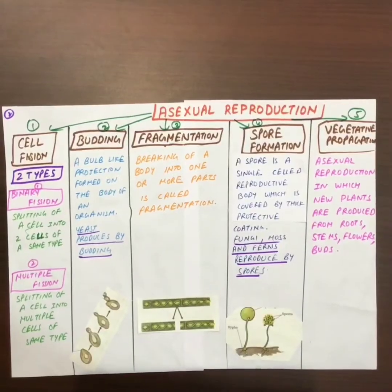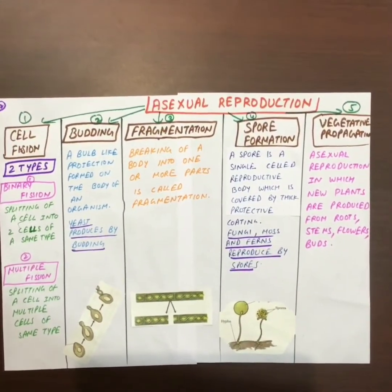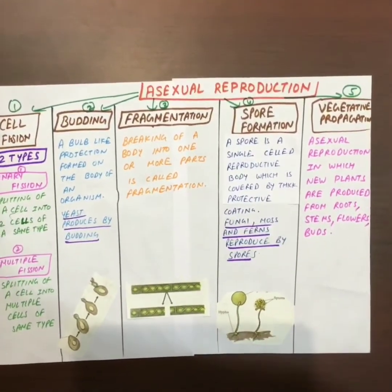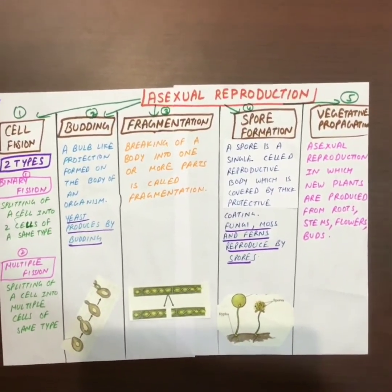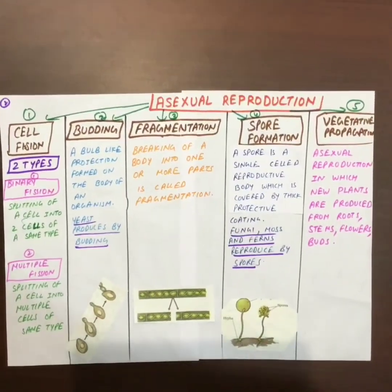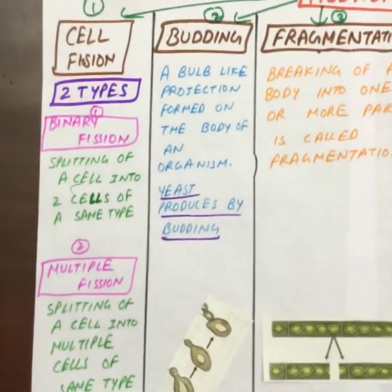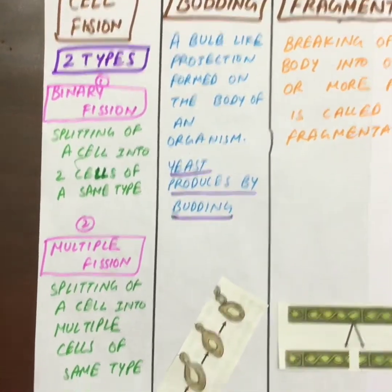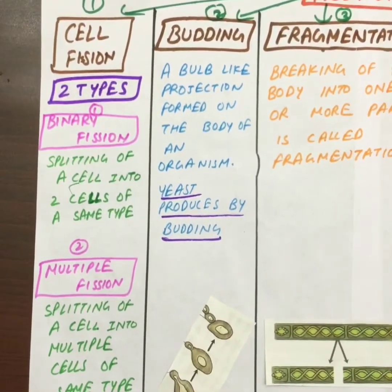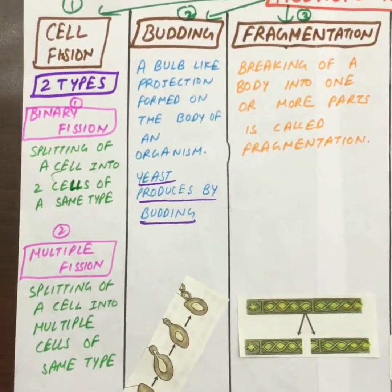Now we shall learn in detail about asexual reproduction. There are five types of asexual reproduction in plants. The first is cell fission. There are two types of cell fission: binary and multiple fission. In binary fission, a cell splits into two cells of the same type, while in multiple fission a cell splits into multiple cells of the same type.